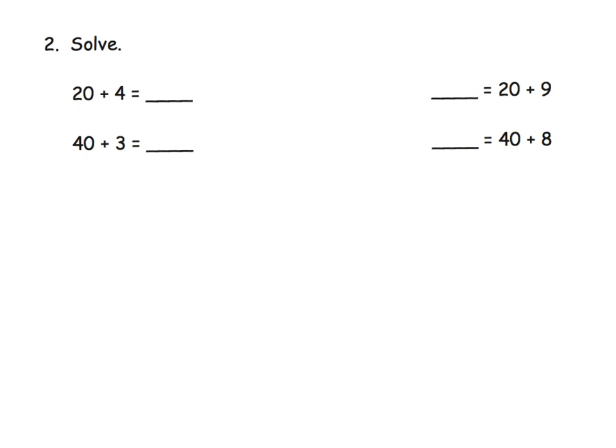Now here it just says solve, so we don't have to use a number bond if we don't want. Teachers and parents, the idea here is we want students to see that 20 is really kind of like we could think of it as two tens plus four more ones. We don't want them to literally write this out, but we want to see that two tens plus four ones equals 24. This is really practicing some basic stuff, review from first grade. So the next one, 40 plus 3 is 43.